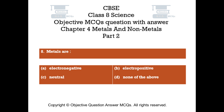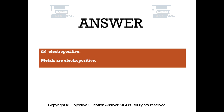Question number 8: Metals are — Option A: Electronegative. Option B: Electro-positive. Option C: Neutral. Option D: None of the above. The right answer is Option B — Electro-positive. Metals are electro-positive.